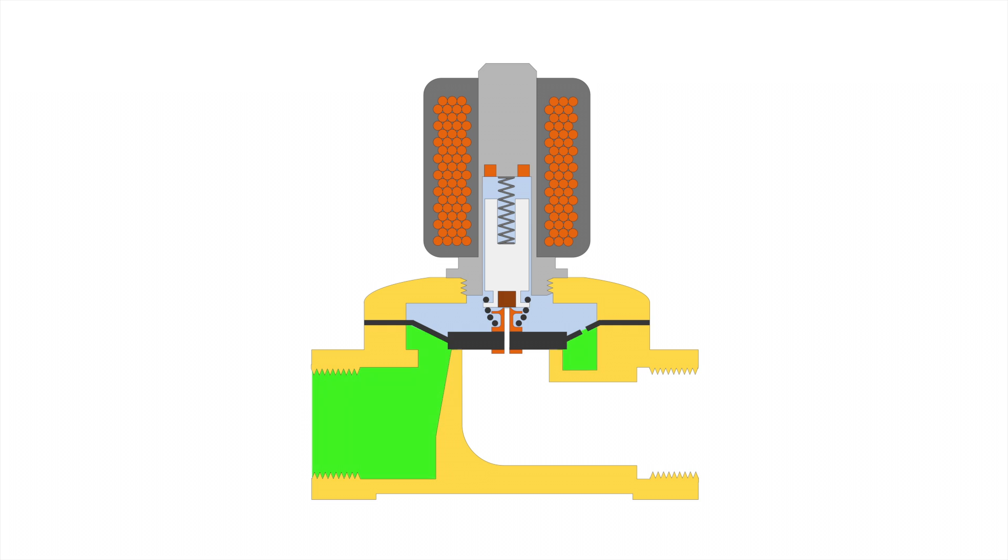In the valve are two chambers that are separated by a flexible membrane. A small hole in the membrane connects the two chambers so that the pressure in both chambers becomes equal. The surface of the membrane in the upper chamber is larger than the surface in the lower chamber. As a result, the membrane is pushed downwards against the valve seat and creates a reliable seal.